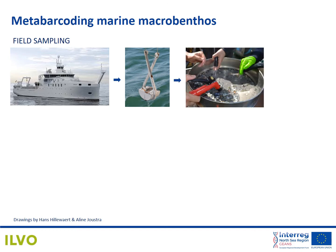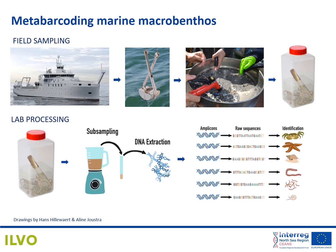Macrobenthos are separated from the sediment using a sieve and all the organisms left on the sieve are put in a jar and preserved in ethanol. Once in the lab, several decisions have to be made, and whether or not species are detected with DNA metabarcoding depends on a number of choices, with the choice of primers being a very critical one. So first we searched for the best primer set that would amplify the highest number of macrobenthos species from our study area, which is the Belgian part of the North Sea.